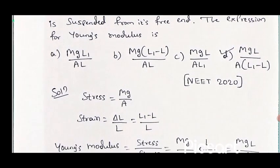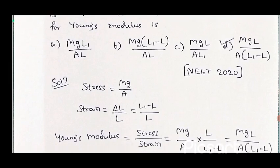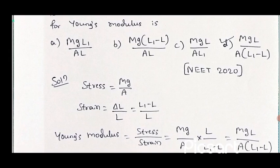Strain, as we already know, is the change in configuration to the original configuration. The change in configuration is delta L, and the original configuration is L. Delta L equals L1 minus L, where L1 is the length after applying the force and L is the initial length. So strain equals delta L divided by L, that is (L1 minus L) divided by L.